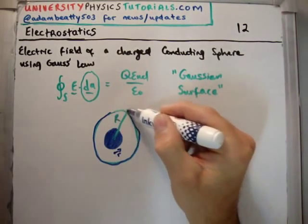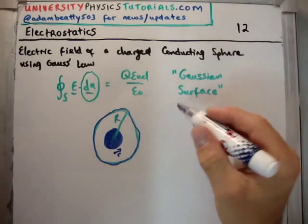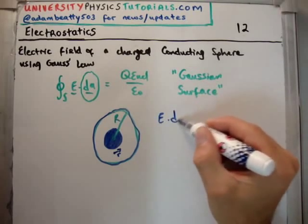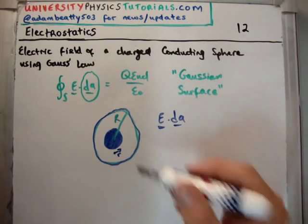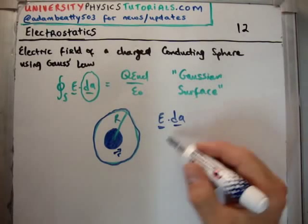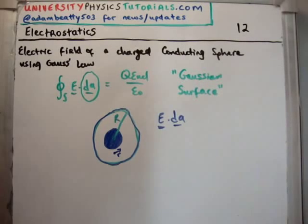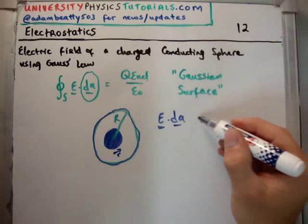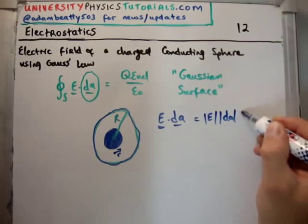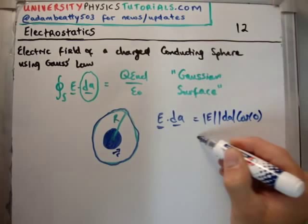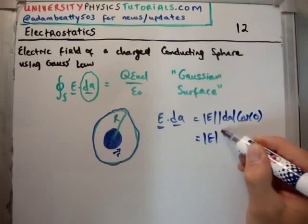What we need to do is look at the flux due to this charged conducting sphere on our Gaussian surface. So we take E dot dA. Now we know that E is radial because it's a sphere. E has to be radial, and dA is also radial because I showed you that a moment ago for a sphere.